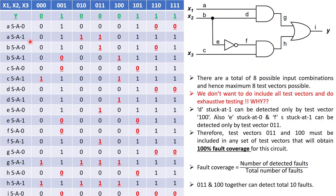The rows from the 3rd through the 19th denote faulty responses for each stuck-at fault. There was a lack of space for the last row (I stuck at 1), but you can understand that these 18 rows denote the faulty responses, while the second row denotes the correct response.